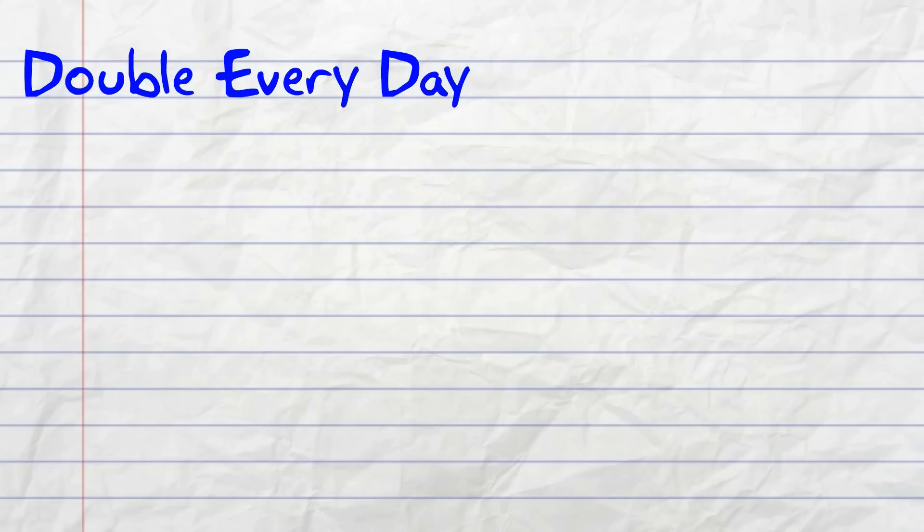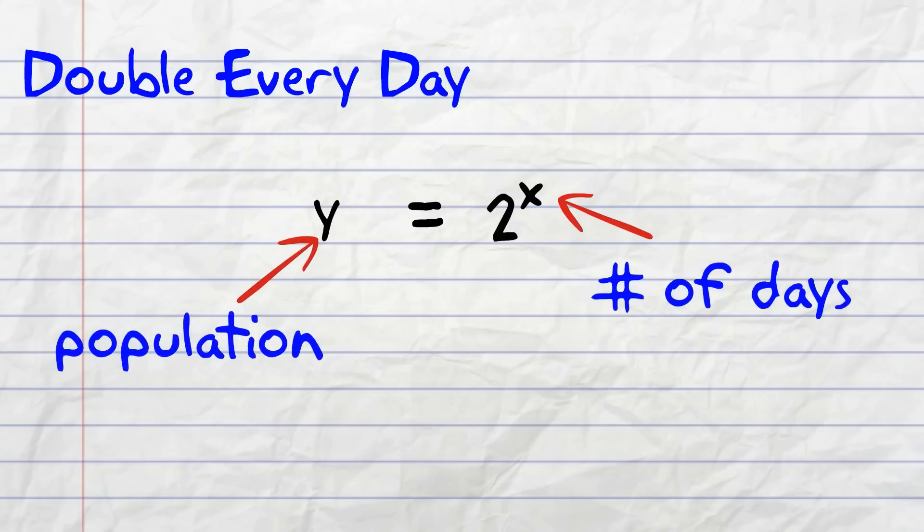In our model, if you double it every day, then we use this equation: y equals 2 raised to the x, where x is the number of days, and y is the population on that day.